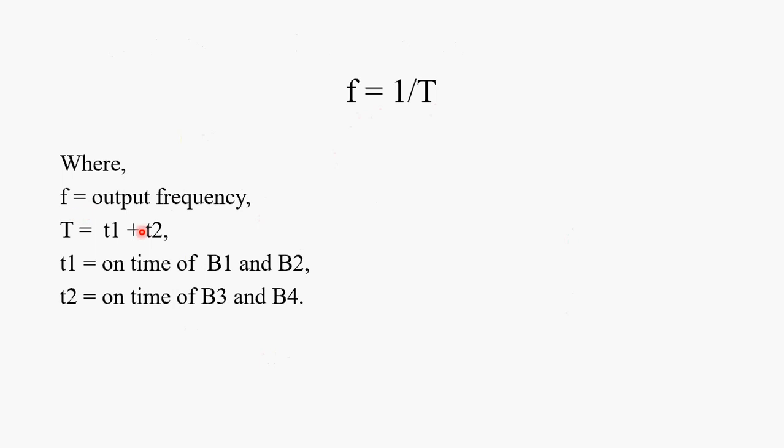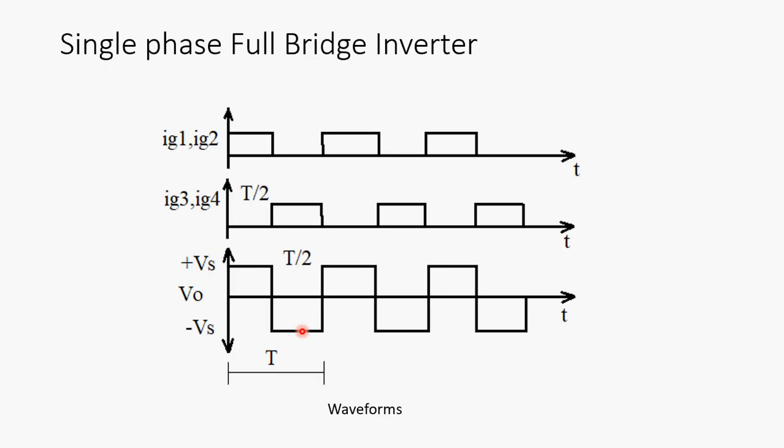Where F is output frequency, T is T1 plus T2. T1 is nothing but on time of B1 and B2, and T2 is nothing but on time of B3 and B4. You can see, once again, we will go to this waveform. And clearly, anyone can set the desired output frequency by going the reverse way.